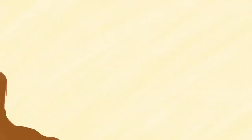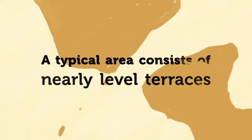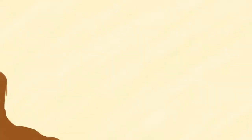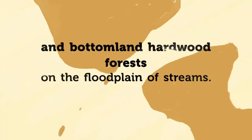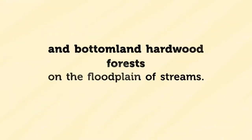A typical area consists of cultivated crops on the nearly level terraces and bottomland hardwood forests on the floodplain of the streams.